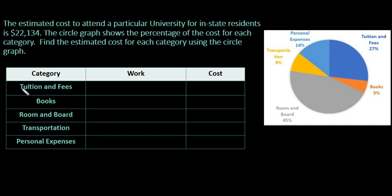Hi! For this video, I want to use a circle graph or pie chart to help us find the cost of each of these categories based on the percentages for all of them. The estimated cost to attend a particular university for in-state residents is $22,134. So this is the total cost for the year. We're going to use the percentages to figure out what each of the costs for each of the individual categories is.